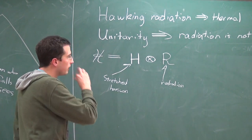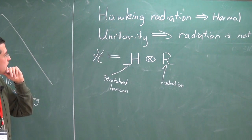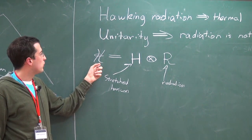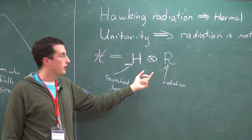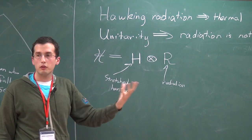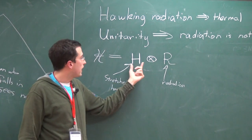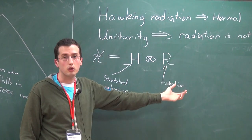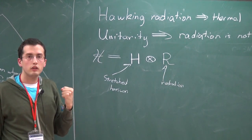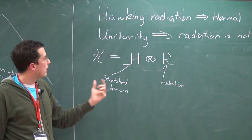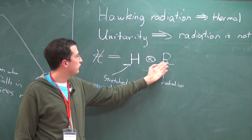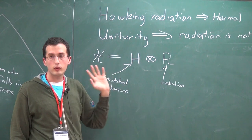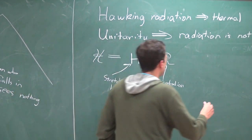What Page said was: I don't know what the state is on the entire space, and I don't know what the dynamics is, other than that over time the size of the horizon factor decreases and the size of the radiation factor goes up. Let's try and figure out what is the entanglement between these two sub-factors if the total system is in a random pure state. And here's what he found.